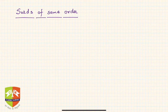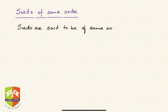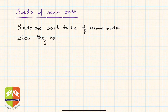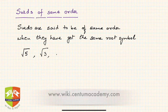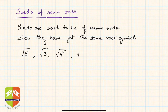Radicals are said to be of the same order when they have got the same root symbol. For example, square root of 5, square root of 3, square root of 4 to the power 5, square root of x to the power 3 — all are radicals of the same order.